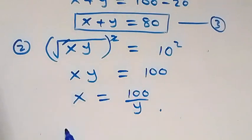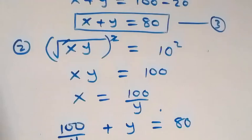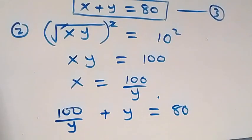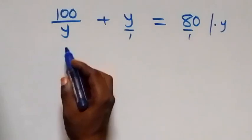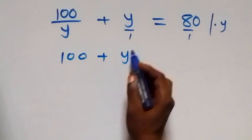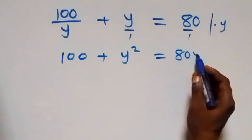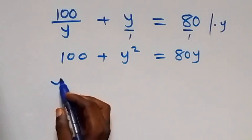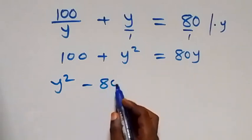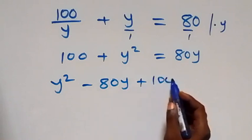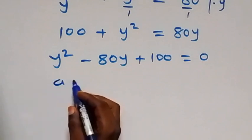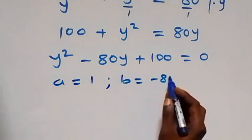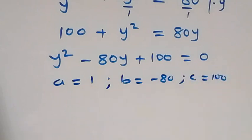Substituting x = 100/y back into equation 3 (x + y = 80), we get 100/y + y = 80. Multiplying through by y to clear the fraction: 100 + y² = 80y. Rearranging, we have y² − 80y + 100 = 0, a quadratic with a = 1, b = −80, c = 100.